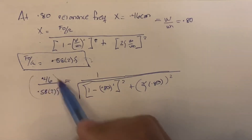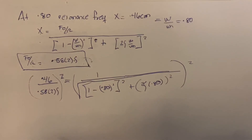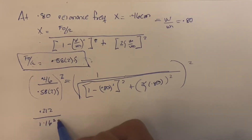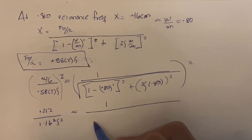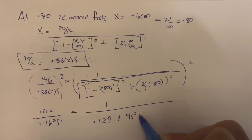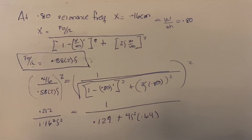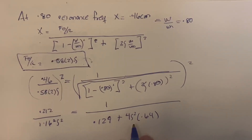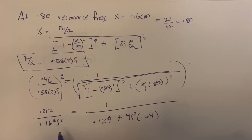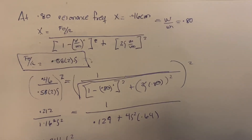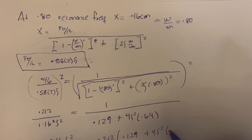Squaring both sides, we get 0.212 over (1.16 times damping ratio) squared equals 1 over (0.129 plus 4 times damping ratio squared times 0.64). Cross-multiplying and rearranging, we get 1.346 times damping ratio squared equals 0.212 multiplied by (0.129 plus 4 times damping ratio squared times 0.64).